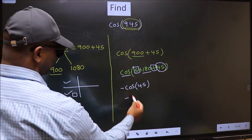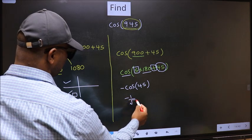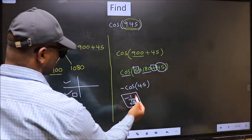So negative cos(45°) is -1/√2. This is our answer.